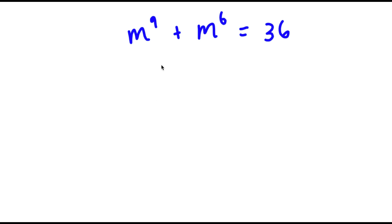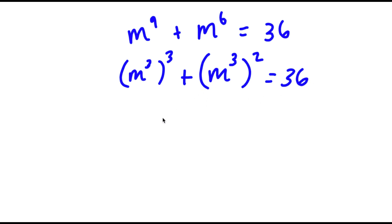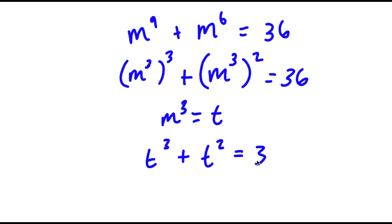In this problem, I have m to the power of 9 plus m to the power of 6 is equal to 36. First we write m to the power of 9 as m to the power of 3 to the power of 3, and then we write m to the power of 6 as m to the power of 3 to the power of 2, and this is equal to 36. I'm going to let m to the power of 3 equal the variable t, so now I have t to the power of 3 plus t squared is equal to 36.